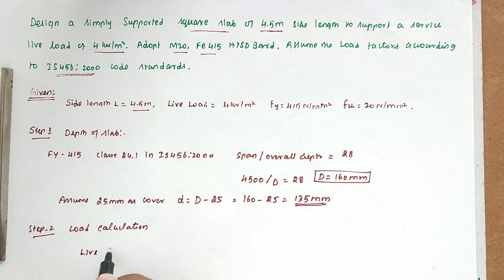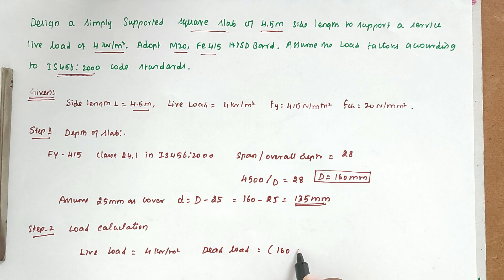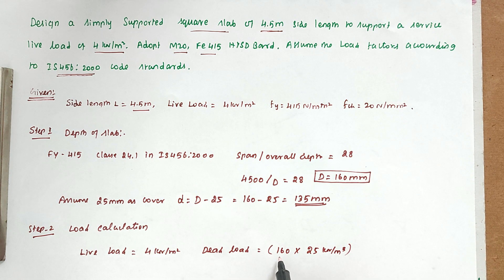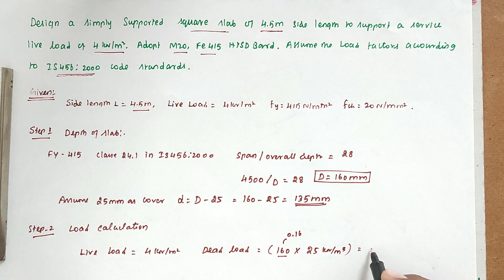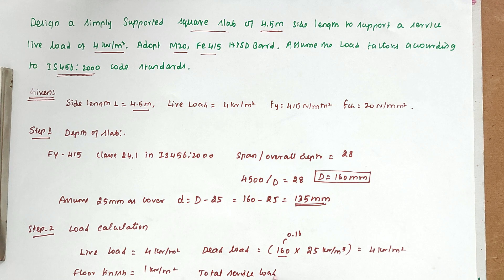Step 2 - Load Calculation: Live load = 4 kN/m² (given). Dead load = depth × unit weight of concrete = 0.16 m × 25 kN/m³ = 4 kN/m². Floor finish = 1 kN/m². Total service load = 4 + 4 + 1 = 9 kN/m².